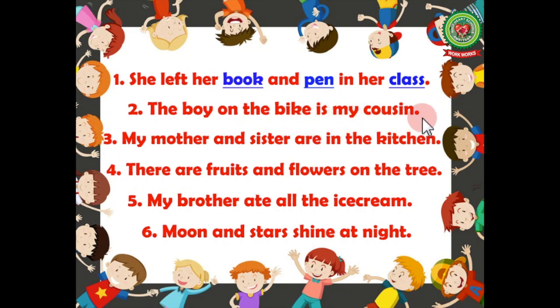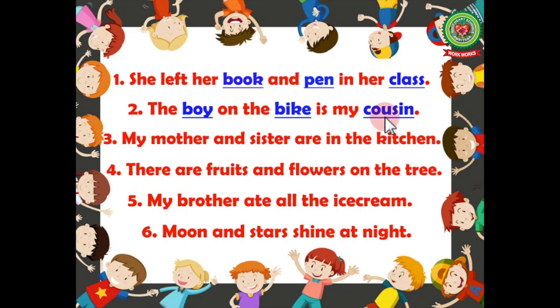Number two: the boy on the bike is my cousin. Let's check the answer. Boy — name of a person, so noun. Bike — name of a thing, so noun. Cousin — name of a person, so noun. So we will underline boy, bike, and cousin.